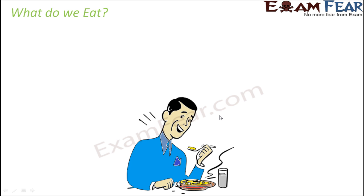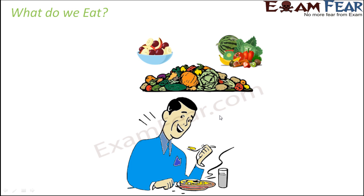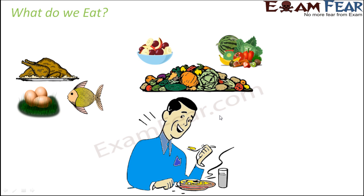When we talk about ourselves, what do we eat? We eat a variety of food items. Some of us eat a lot of vegetables and fruits, either in raw form as salads or by cooking them into different dishes. Some of us also eat products obtained from other animals, for example egg, fish, and meat. So these are also eaten by human beings.